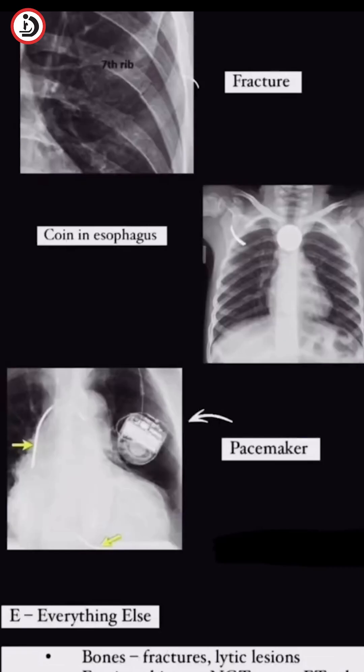E is for everything — bones and more. Look at the ribs, the spine and the floor. Lines and tubes, check their place. Don't miss a thing in this wide open space.